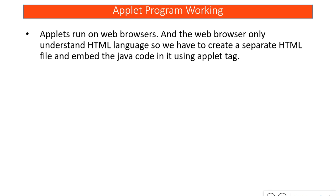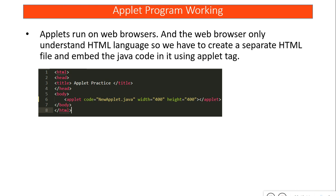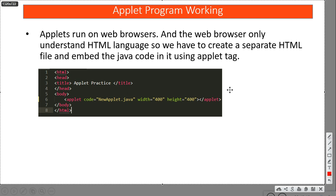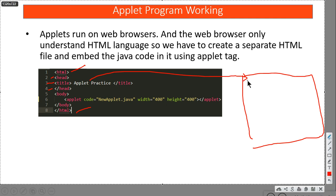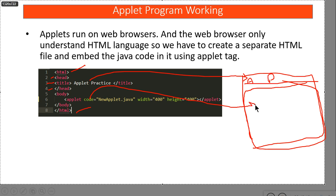Your applet needs to be executed in a web browser, and web browsers only understand HTML. So if you want to run your applet program you must include an HTML file as well. I'm using the HTML tag structure — the html tag, head tag, title 'Applet Practice' which will be shown as the window title — and then the body tag where the applet will be drawn.